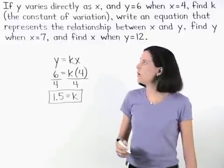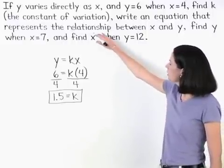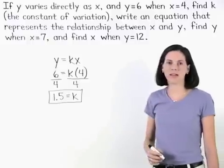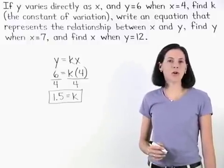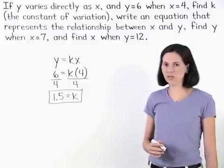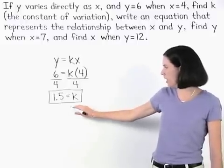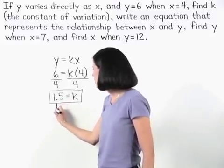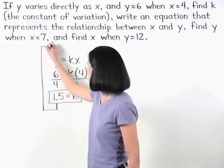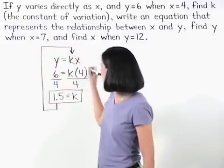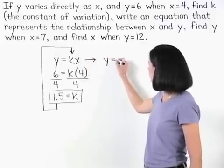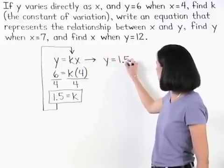Next, we're asked to write an equation that represents the relationship between x and y. Since we know that k, our constant of variation, is 1.5, we simply plug 1.5 back into our direct variation formula for k, and we have y equals 1.5x.